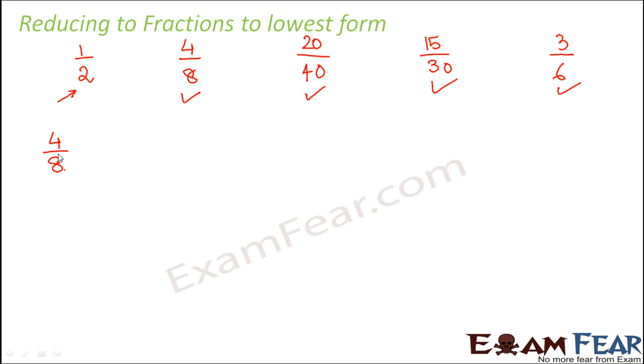By now you understand what is a common factor, right? For example, if you talk about 4, what are the factors of 4? 1, 2, 4. So factors are basically divisors, those numbers which exactly divide 4. So 1, 2, and 4 are the factors of 4. What are the factors of 8? 1, 2, 4, 8.